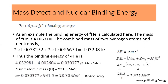To answer the question of why the nucleus is stable, let's look at the example of carbon-13. Carbon-13 is an isotope of carbon composed of six protons and seven neutrons, giving a mass number of 13.